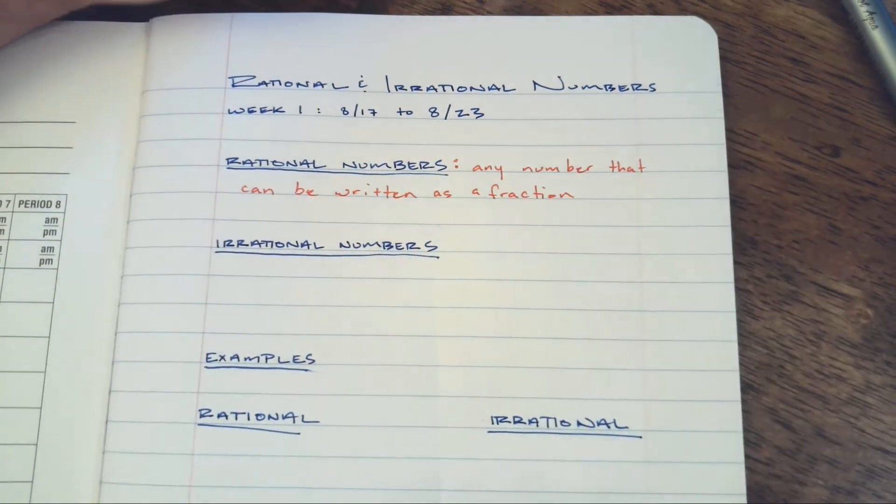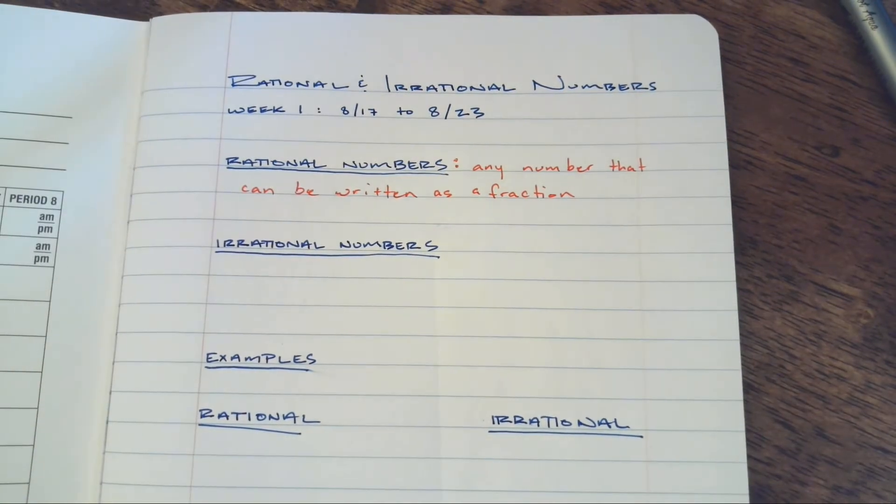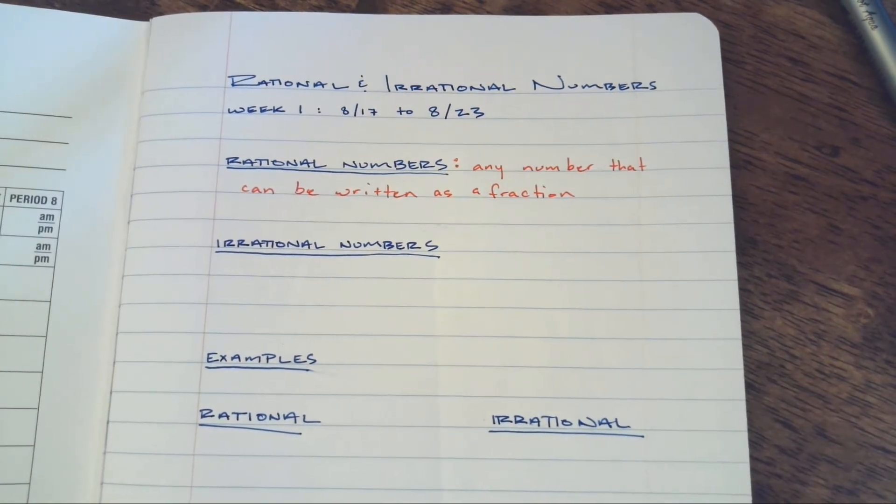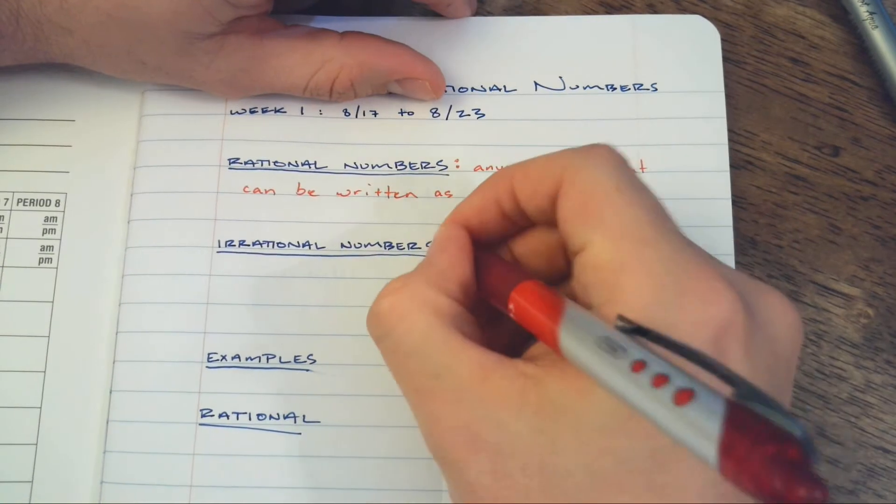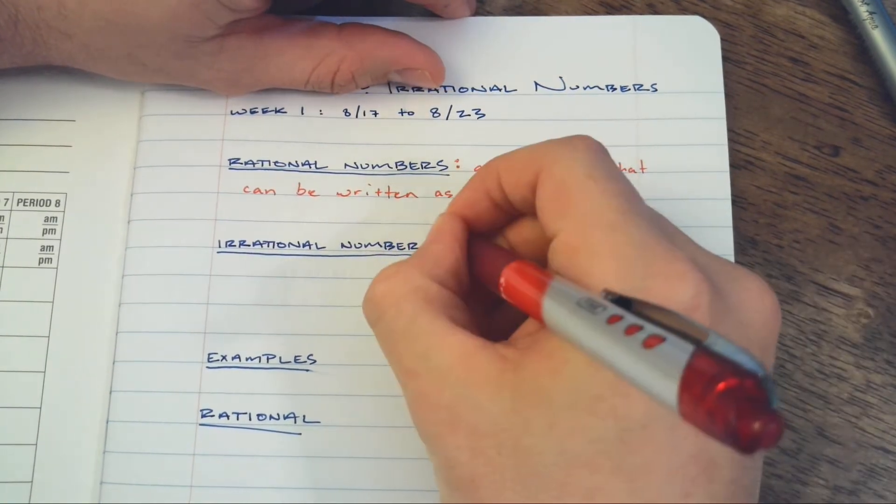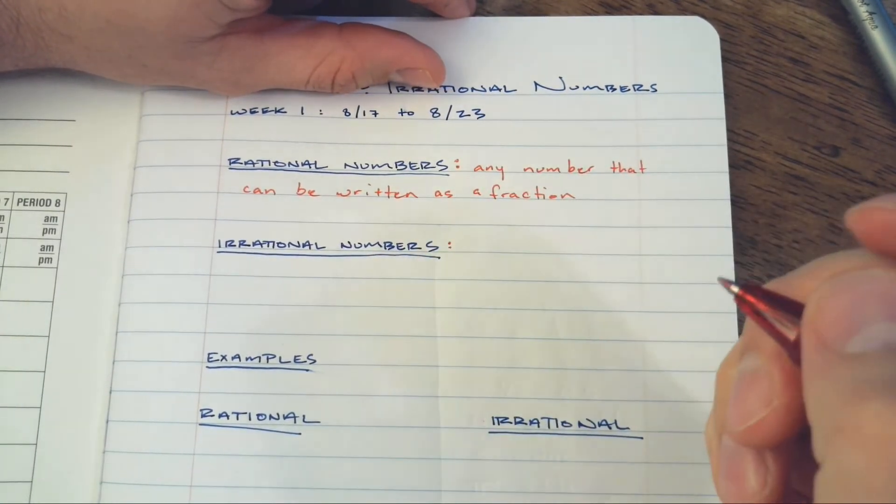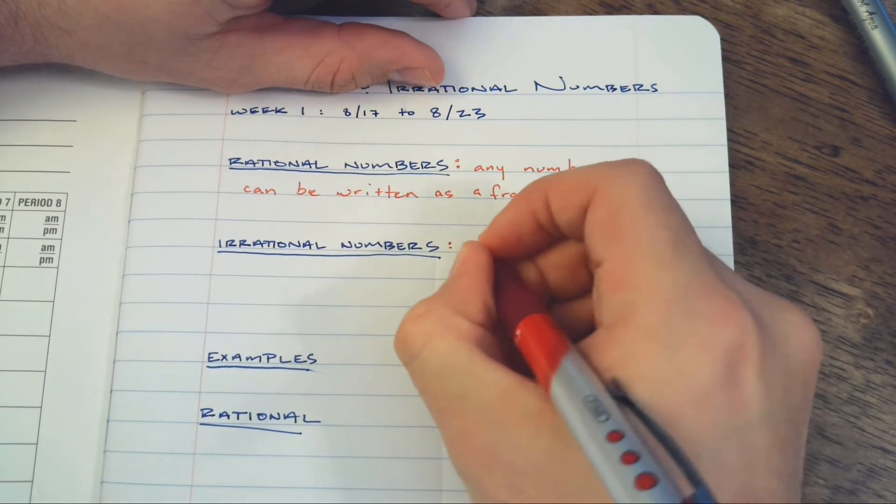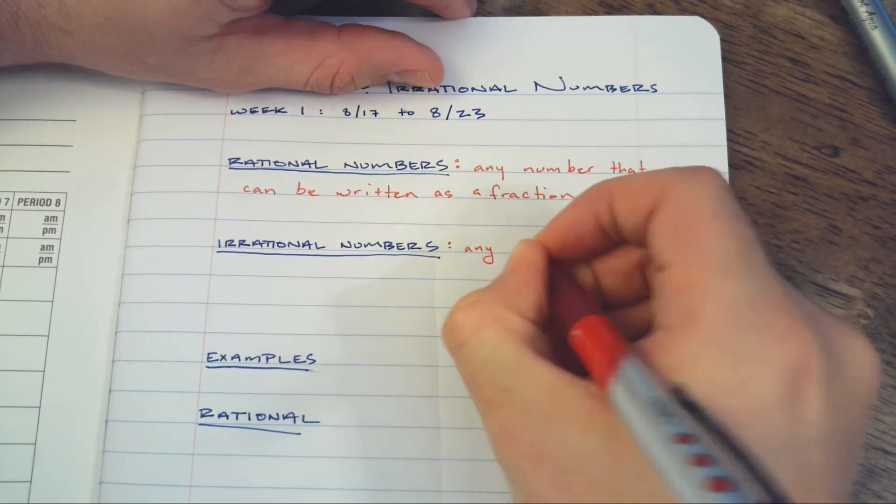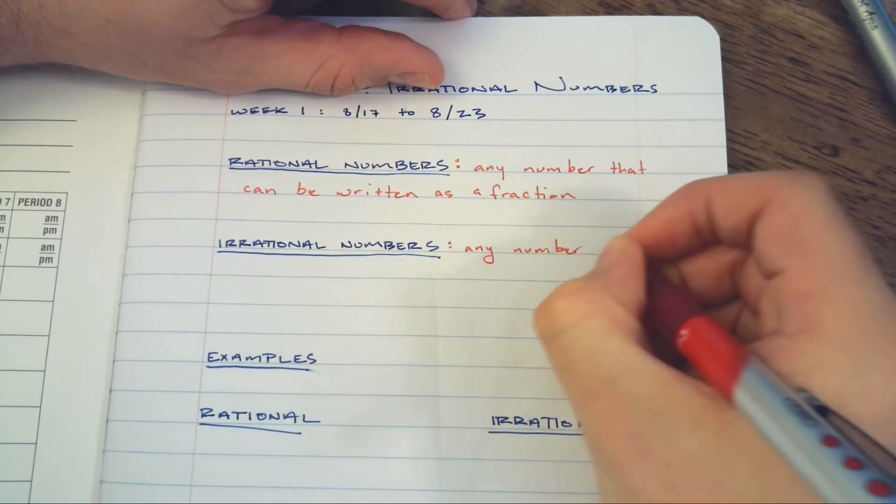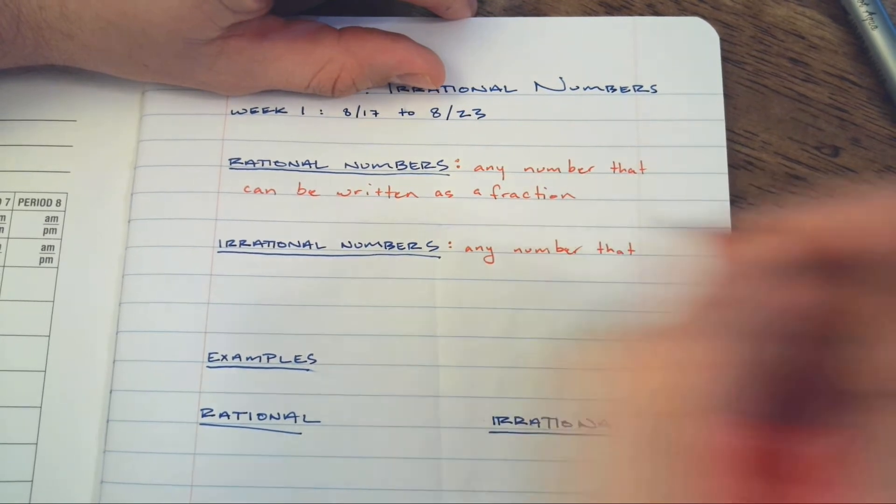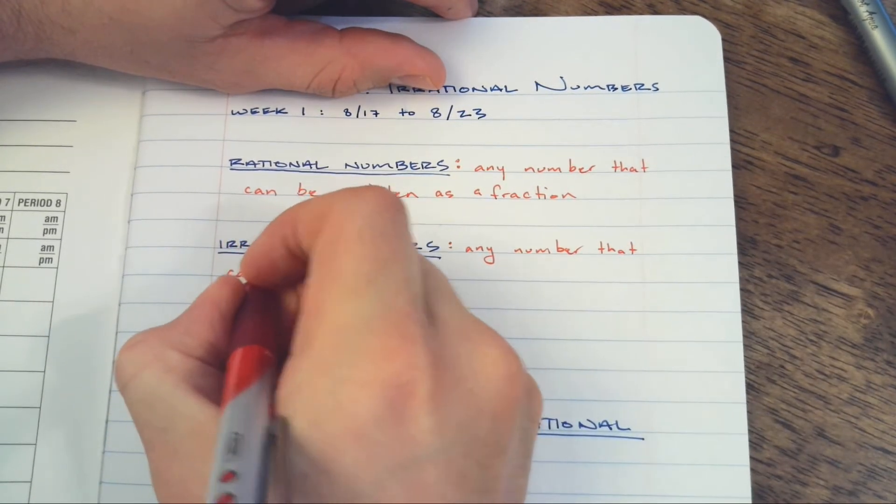All right, that's the entirety of the definition - any number that can be written as a fraction. Irrational numbers, well, it's any number that's not rational. So any number that cannot be written as a fraction.